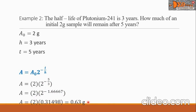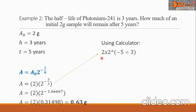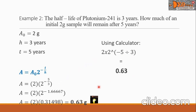We must not forget the unit of measurement, which is grams. For a quick computation using a calculator: 2 times 2, raise-to symbol, open parenthesis, negative 5 divided by 3, close parenthesis, then hit the equal sign. You will get 0.63 grams. This is our final answer.